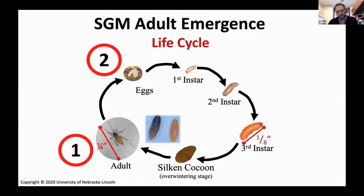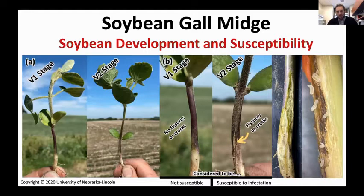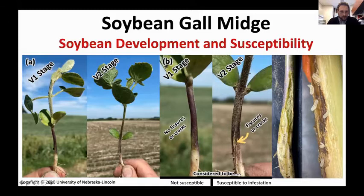Adults are emerging from last year's soybean fields, moving via wind — they're not great flyers — and interacting with this year's soybean plants. There are some unique things related to plant development and egg laying. You see here a contrasting picture between V1 and V2 stage plants. There's a cracking or fissure development that forms below the cotyledonary node; it's more apparent as we get closer and more so under a scope. These fissures or cracks are the initial points where eggs are laid, especially as the plant develops.